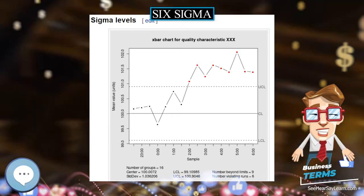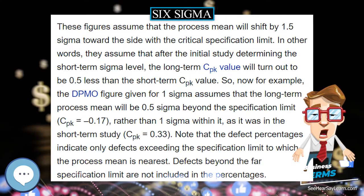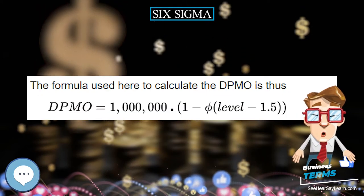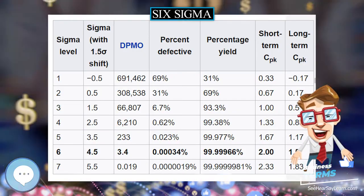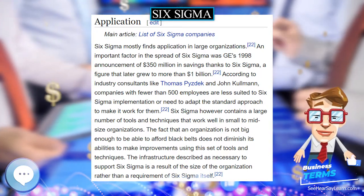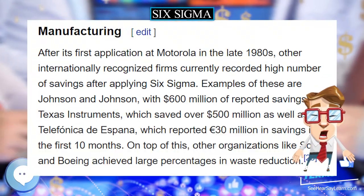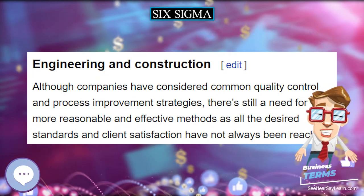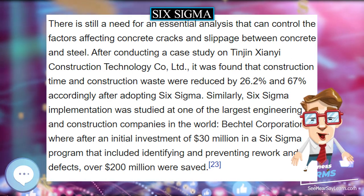In recent years, some practitioners have combined Six Sigma ideas with lean manufacturing to create a methodology named Lean Six Sigma. The Lean Six Sigma methodology views lean manufacturing, which addresses process flow and waste issues, and Six Sigma, with its focus on variation and design, as complementary disciplines aimed at promoting business and operational excellence. In 2011, the International Organization for Standardization, ISO, published the first standard ISO 13053 defining a Six Sigma process.